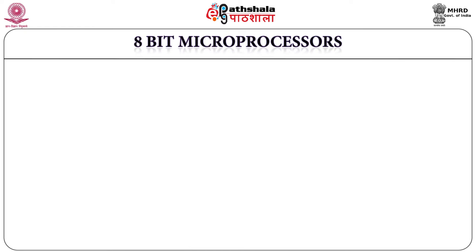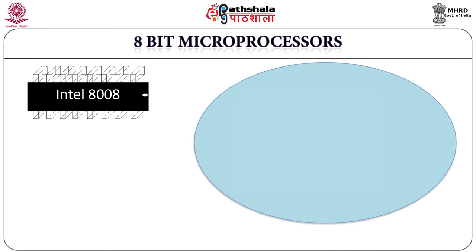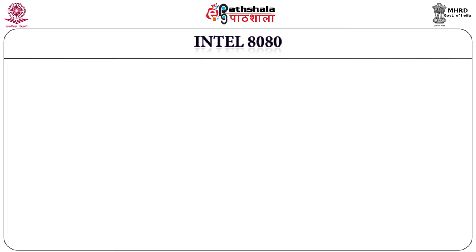The 8008 microprocessor was brought to market by Intel around 1972. It was fabricated using PMOS technology and designed initially for only one customer. A set of 48 instructions was used to perform different operations, entirely different from the 4004. It was capable of addressing 16 KB of memory with an 8-bit address. Data bus size was also 8-bit. Stack level was increased to 7 from 3. Interrupts were introduced to process I/O device requests, but there was no instruction provided to disable the interrupt.